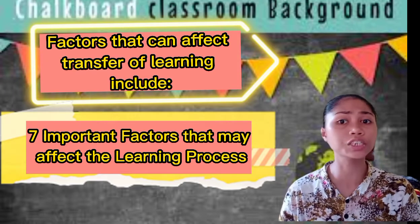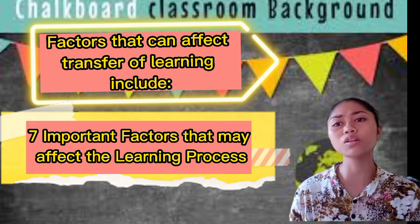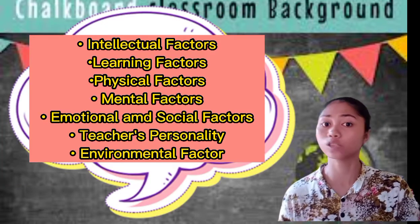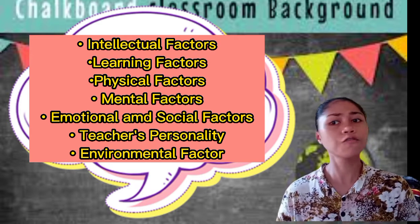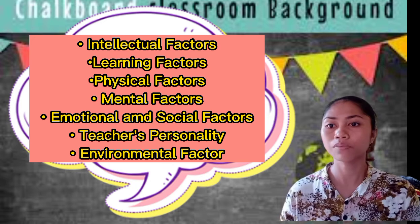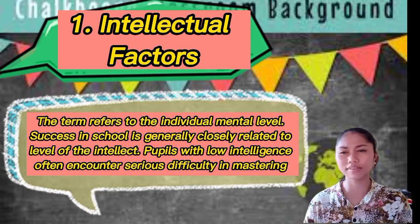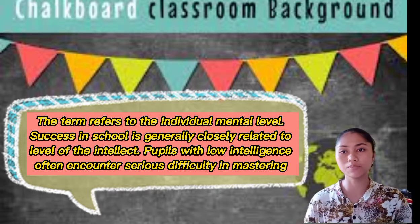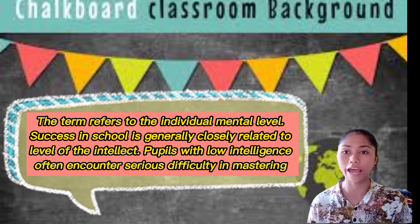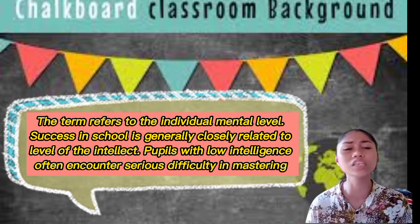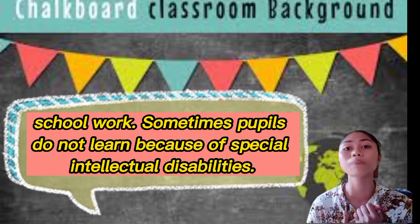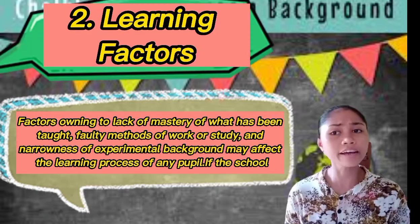Let's discuss the factors that can affect transfer of learning. There are seven important factors. First is the intellectual factor, which refers to the individual's mental level. Success in school is generally closely related to level of intellect. Pupils with low intelligence often encounter serious difficulty in mastering skill work. Sometimes pupils do not learn because of special intellectual disabilities. Second is learning factors.